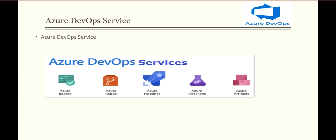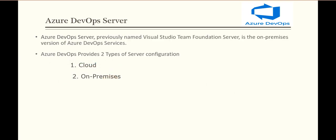Azure DevOps Server was previously named Visual Studio Team Foundation Server. It is the on-premises version of the Azure DevOps service. There are two types of server configurations: cloud and on-premises. On the cloud, you keep your code on the cloud rather than locally. On-premises means keeping the code on a particular local machine. These are the two server configurations for Azure DevOps.